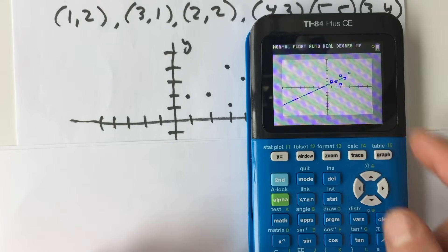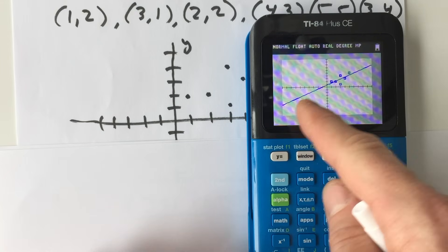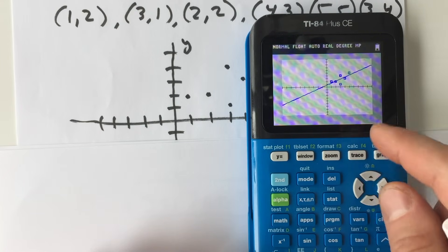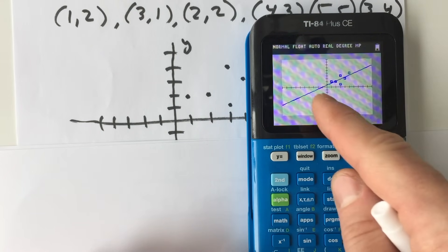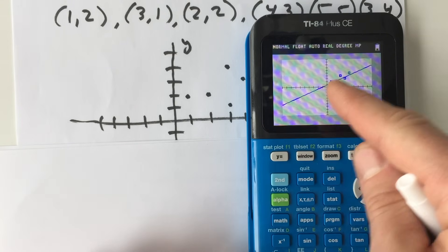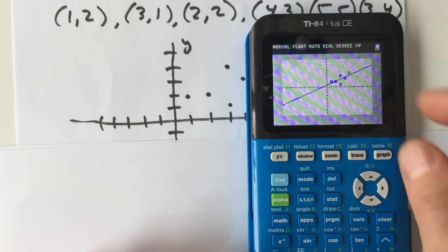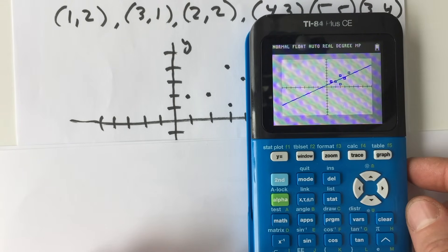Now you can see our data points right there, and you can see there's our line of best fit, and you can see some of the data points are above the line, some are below the line, some are on the line, but essentially this is our line of best fit. This is the line that's going to come closest to those points as possible.